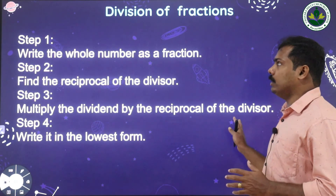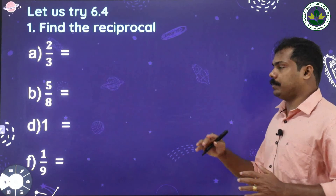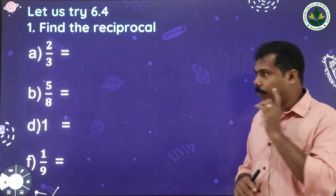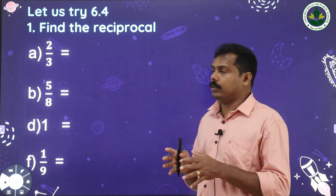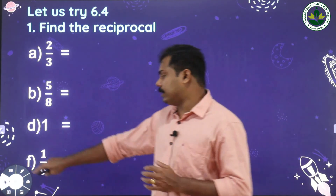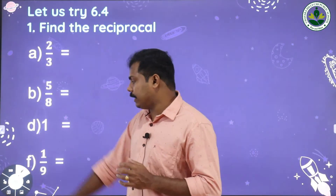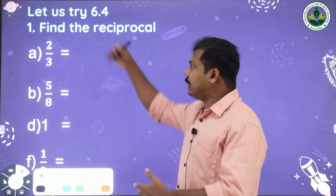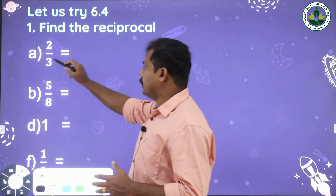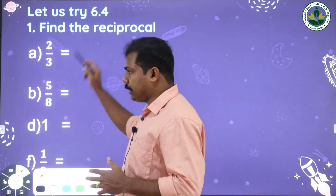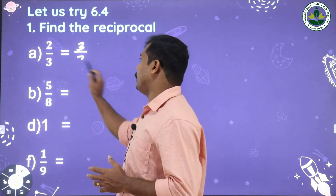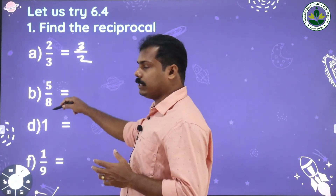The fourth step is to write it in lowest form. Let us try Exercise 6.4, question number one: find the reciprocal of the given numbers. First one is 2/3. How will you find the reciprocal of 2/3? Just interchange the numerator and denominator — numerator becomes denominator and denominator becomes numerator. So it is 3/2.